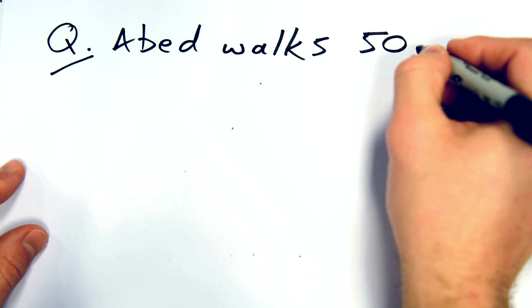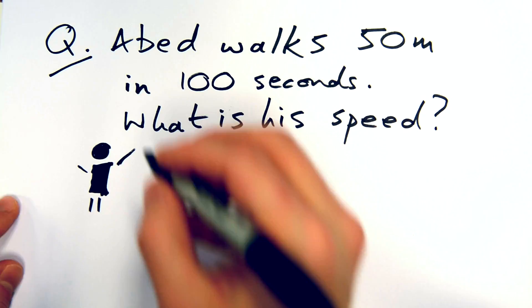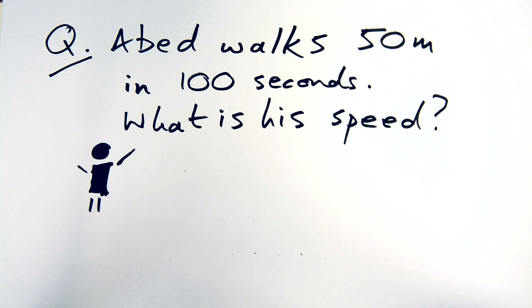So typical question: Abed walks 50 meters in 100 seconds, what is his speed? Now more often than not you'll get lots of fluff included in a question, as if the examiner is looking to break into the short story game. But the important thing is to keep your blinkers on and look for the crucial information that the question is giving you.